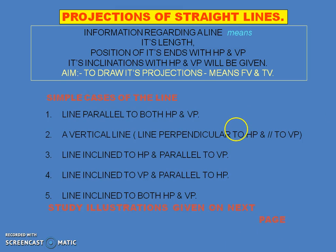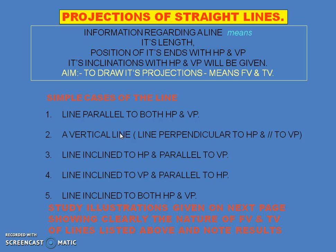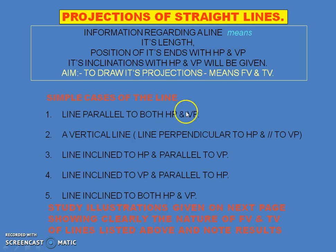These are the simple cases of the line which we need to draw. The first case is a line parallel to both HP and VP. The second case is a vertical line — a line perpendicular to HP and parallel to VP. The third case is a line inclined to HP and parallel to VP. The fourth case is a line inclined to VP and parallel to HP. The fifth case is a line inclined to both HP and VP, which will be discussed in the next session. In this session we are considering only these four cases.